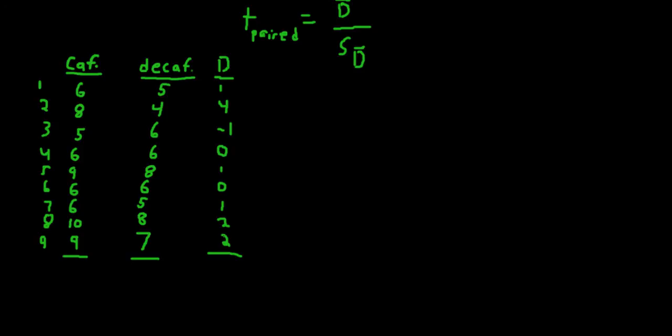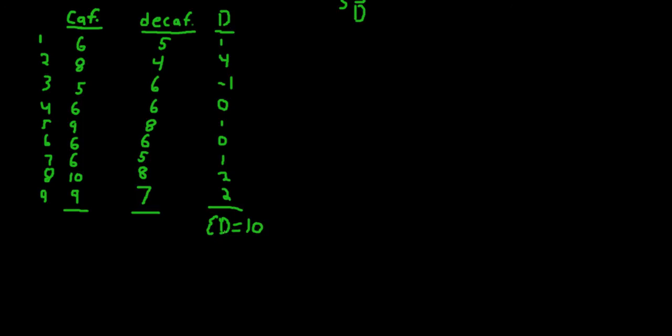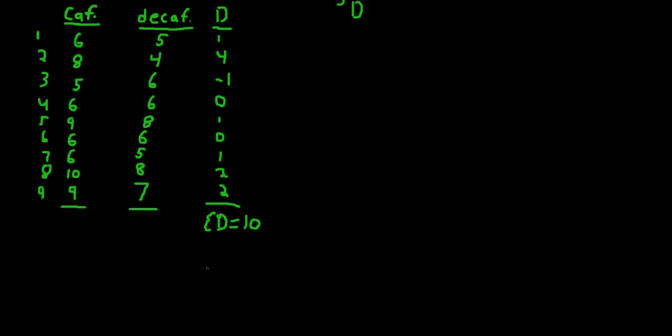So we can get the sum of the differences, which would be 10. So the sum of the different scores is 10. And if we divide 10 by the number of scores,